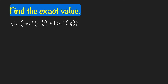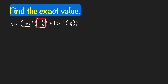Let us find the exact value of the following expression. First note that negative 3 over 5 is not a special value of cosine, and 1/4 is also not a special value of tangent. So in this kind of problem it's better to represent these inverse trig functions as some angles — let's say alpha and beta.